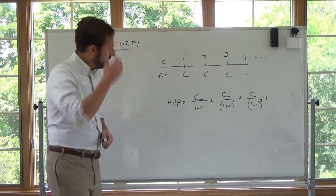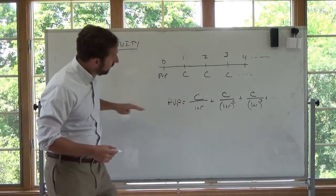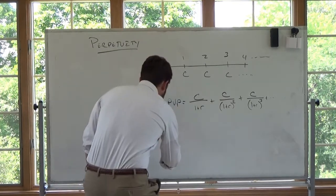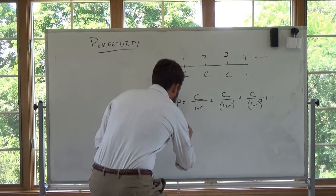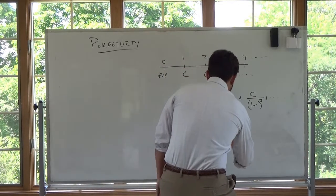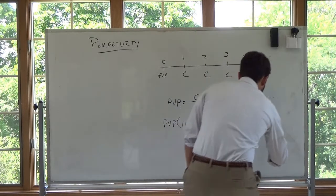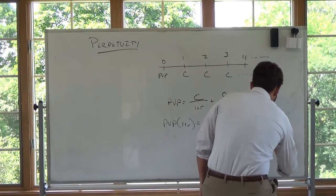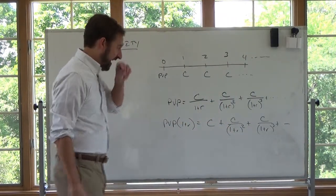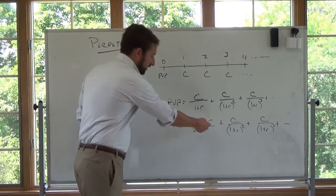So what you can note is if I multiply through, multiply both sides of this equation by 1 plus R, then I can say present value of a perpetuity times 1 plus R is equal to C plus C over 1 plus R squared plus C over 1 plus R to the third plus off into infinity. And if you look at the two, the only difference is this C.